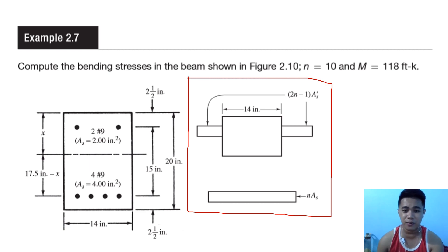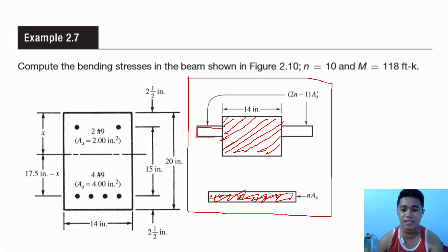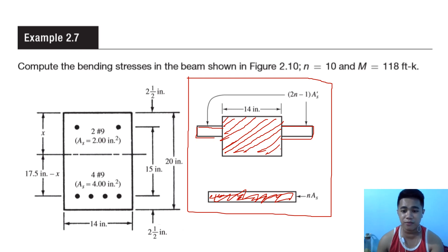The transformed area for a doubly reinforced beam looks like this. Before, what we only have is the square here — that is the concrete, the area of the concrete for the compression side. That is what we only have if it's singly, along with the rebar. But if it's doubly, we already have both. For the compression side, we draw another line that represents our rebar in the compression side. So in our tension portion we have n·As.